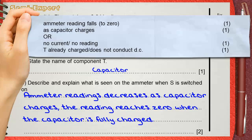This is a full answer. You can also say no current or no reading. Of course, this is at the end of charging. The second mark: T already charged, so it does not conduct DC.